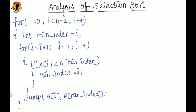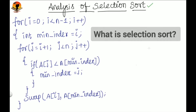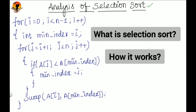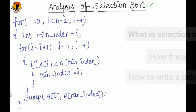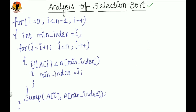Hello everyone, welcome back to my channel. In the series of algorithm analysis, next we are going to analyze the selection sort algorithm. If you want to know what selection sort algorithm is, how it works, and how to write a program for it, everything has been discussed in the previous video — the link is available in the description box and also in the side button. Now, this is the program for selection sort algorithm, and with this program we'll see how to find out the time complexity of best, worst, and average cases.